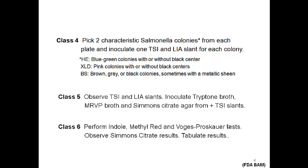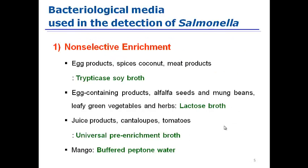The first step is pre-enrichment into non-selective media. There are different types of media because different food products have different bacteria. Tryptic soy broth is a non-selective broth but can help Salmonella growth. Lactose broth, universal pre-enrichment broth, and buffered peptone water are also known non-selective media.